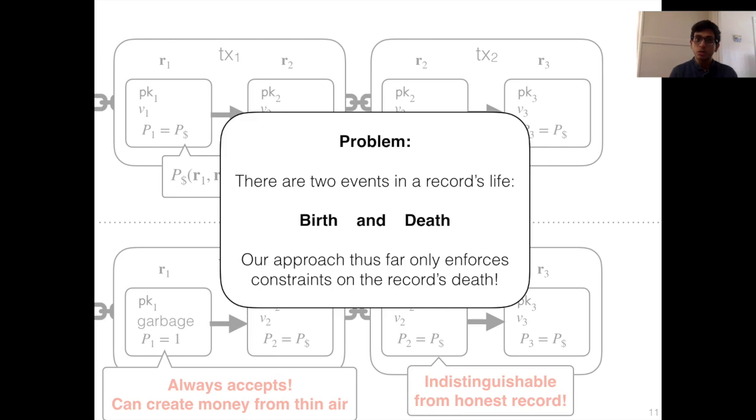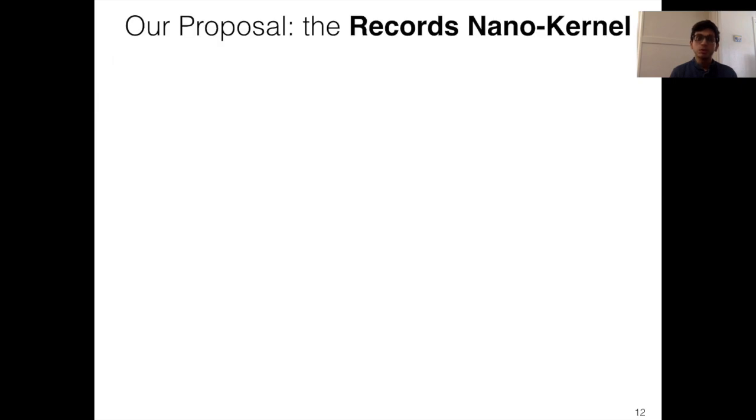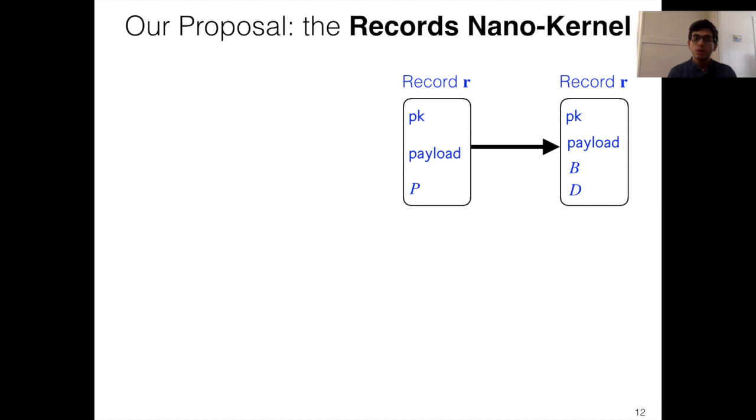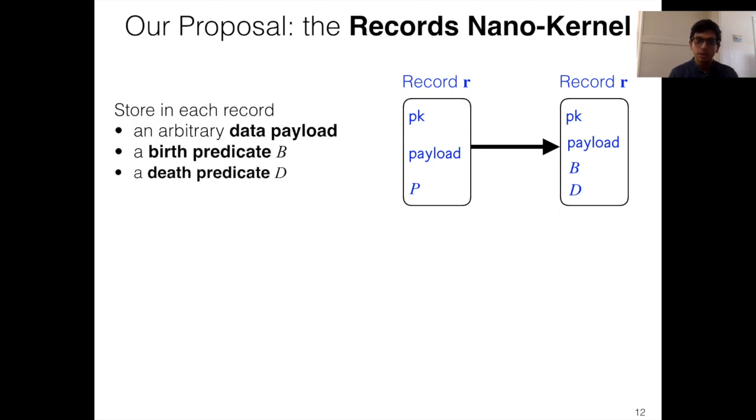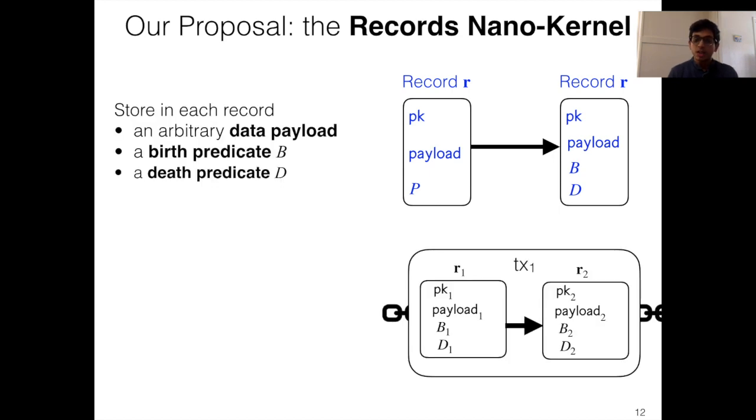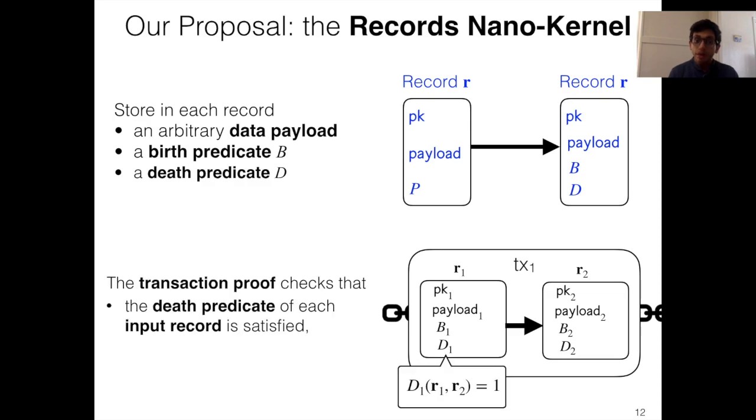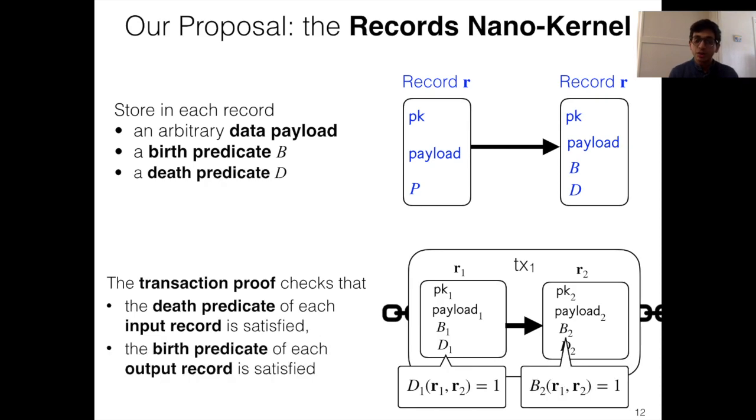Okay, the reason that this problem crops up is that there are two events in a record's life, birth and death. However, our system only enforces constraints on the record's death. There is no constraint on the record being born. So to remedy this, we propose the records nanokernel. In this programming model, now each record contains not only one predicate but two predicates, a birth predicate and a death predicate, and the data payload as before.